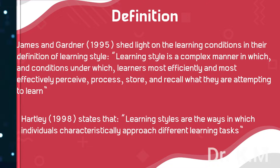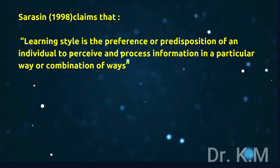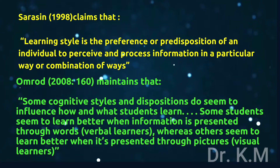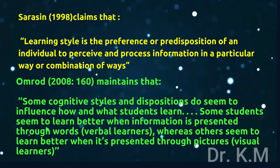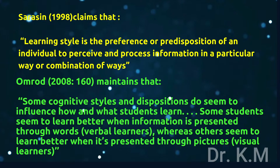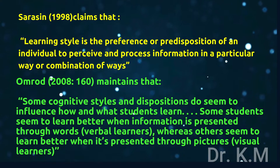Saracen (1998) claims that learning style is the preference or predisposition of an individual to perceive and process information in a particular way or combination of ways. Ormrod (2008, p.160) maintains that some cognitive styles and dispositions do seem to influence how and what students learn — some students learn better through words (verbal learners), whereas others learn better through pictures (visual learners).